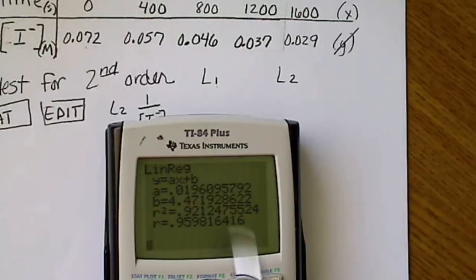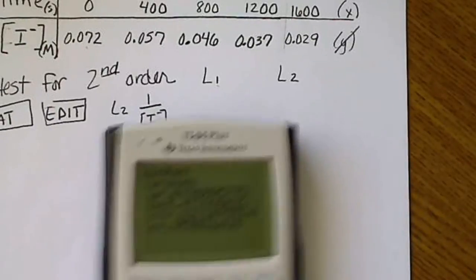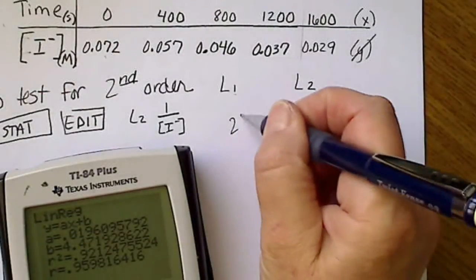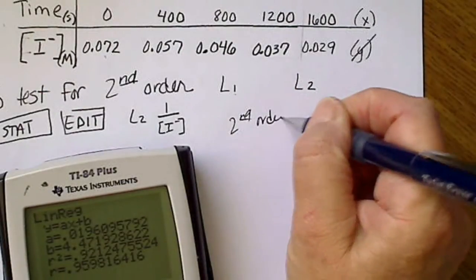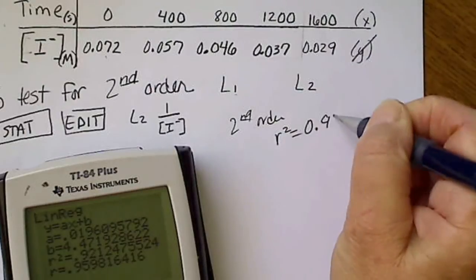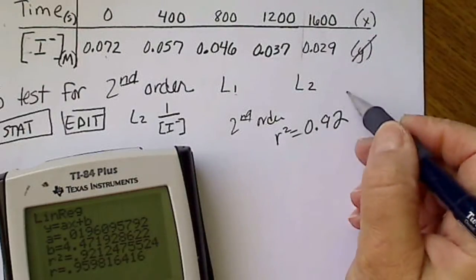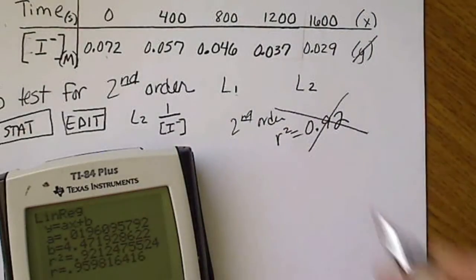And when I do that, I get R squared equals 0.92. So for second-order, I get an R squared value of 0.092. That means that equation is not linear.